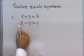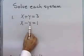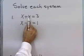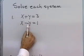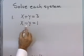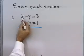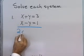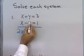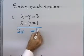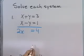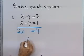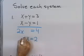Notice that if I add the left sides of the equations together and the right sides together, y plus negative y will be 0y. So I'll simply do that: x plus x is 2x, plus 0y, is equal to 3 plus 1, which is 4. Divide both sides by 2, and x is equal to 2.